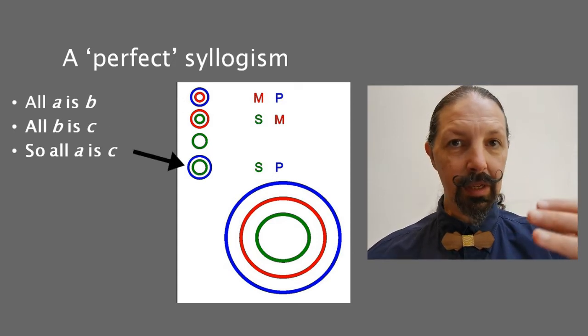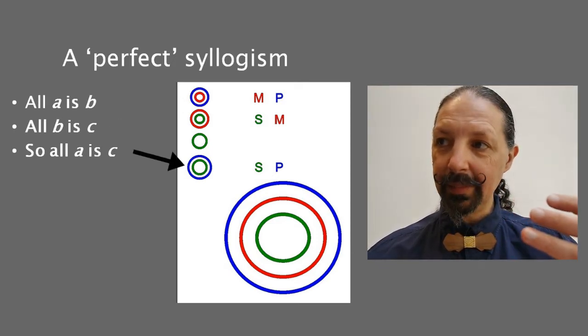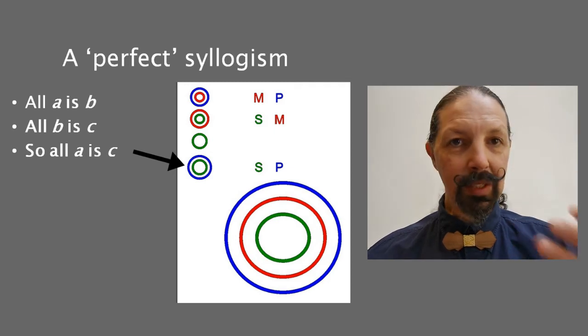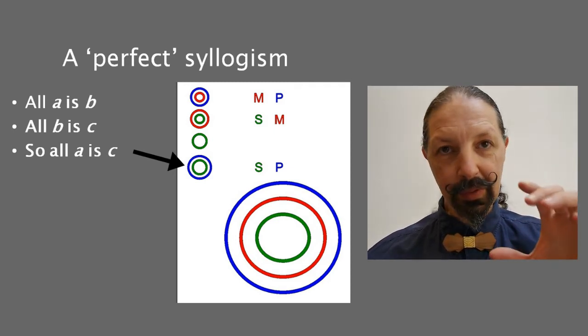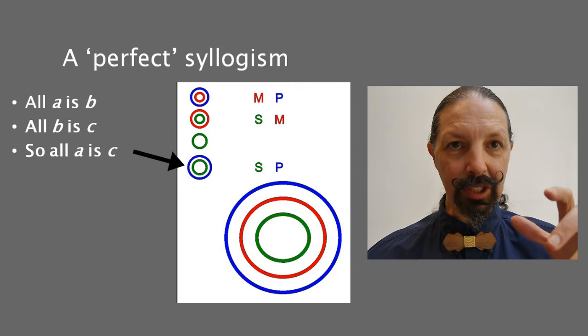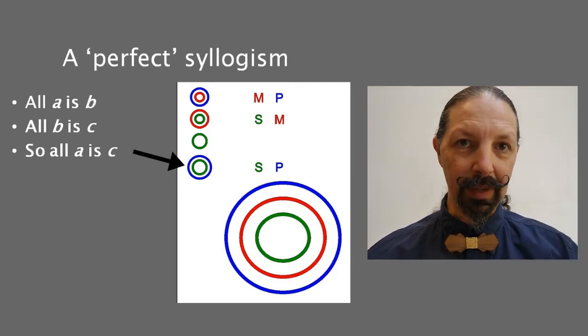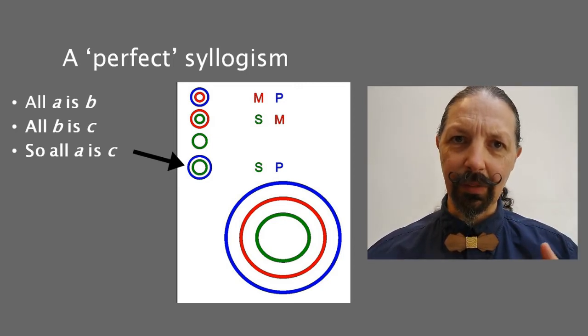Then you derive the conclusion, all A is C. But where's the red circle gone? Well, you have to put the three together, look at their relationships, take the red one out, and then you're left with that. It's a lot of circles, a lot of rubbing out to do.